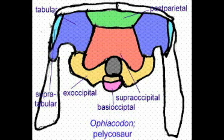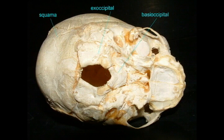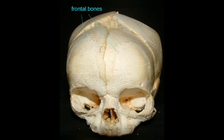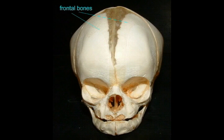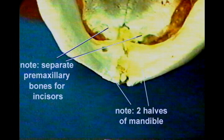Mammalian ancestors did not possess occipital, temporal, or sphenoid bones. Instead, they possessed a series of smaller bones, which gradually fused to form the single composite mammalian bones we find in adult humans. Mammalian ancestors possessed, and human embryos possess, two frontal bones, two vomer bones, and two dentary bones, which fused to form the single bones in adult modern mammals.